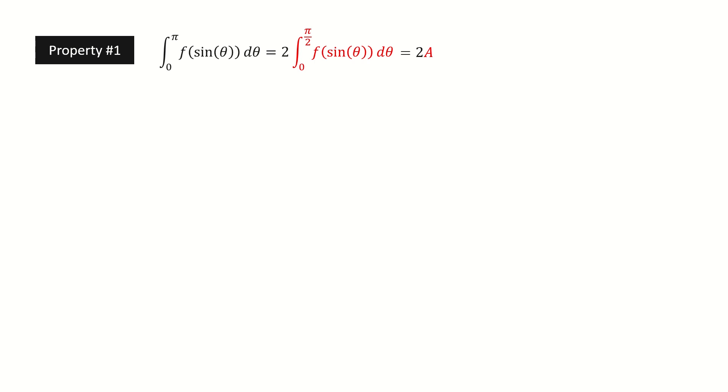For short, we define this red color integral as capital A. So first, we split this integral into two parts at pi over 2. And we define this blue color integral as capital B. So if we can show B equals A, then we're done.